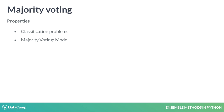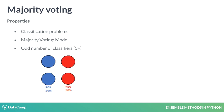It is recommended to use an odd number of classifiers. For example, if we use four classifiers, the predictions for positive and negative classes could be tied. Therefore, we need at least three classifiers, and when problem constraints allow it, use five or more.